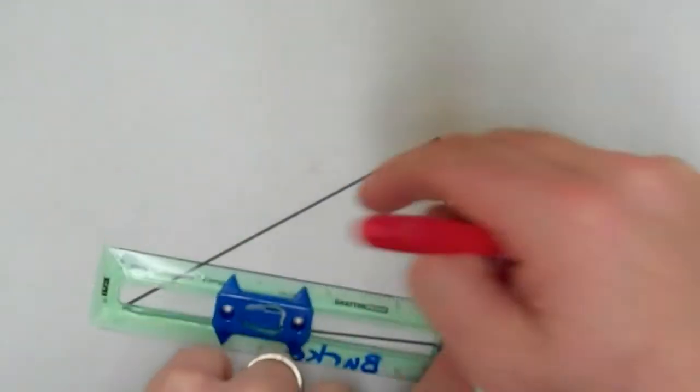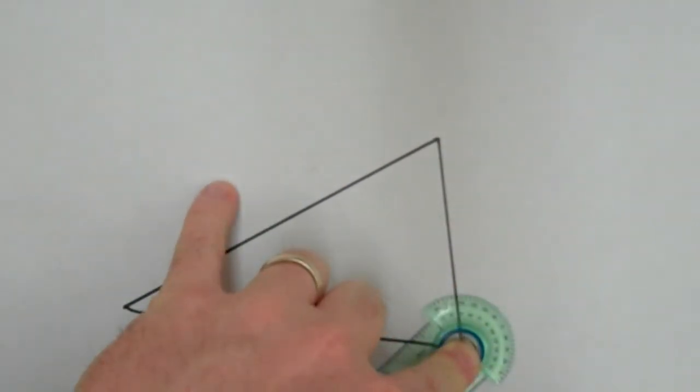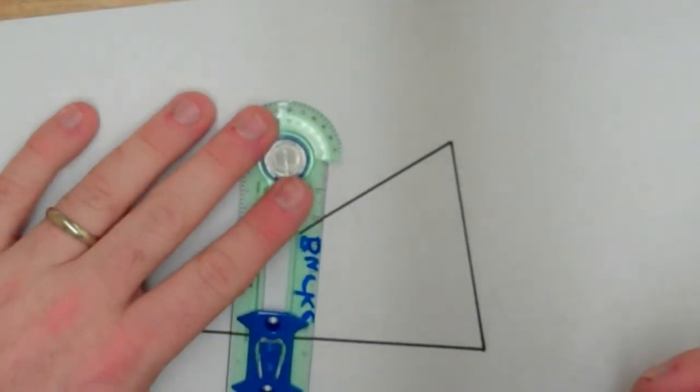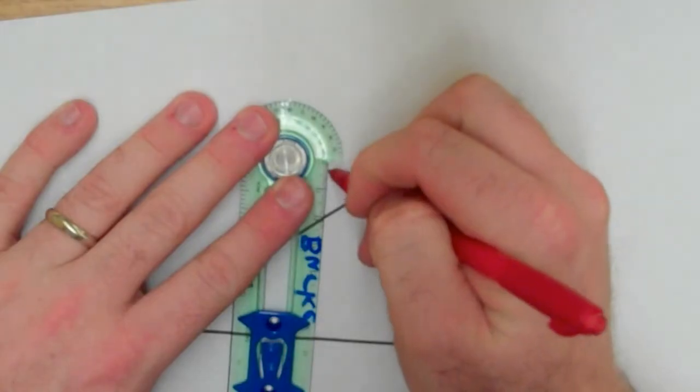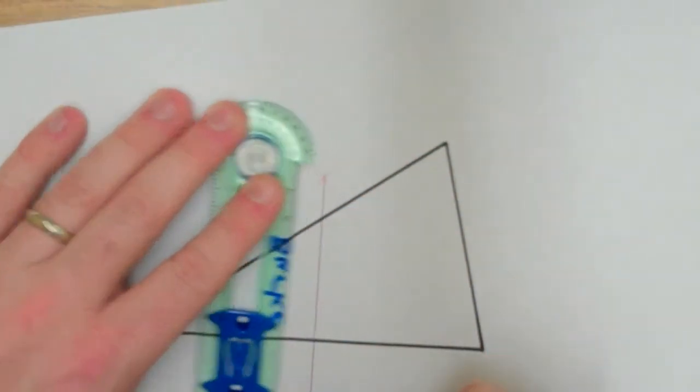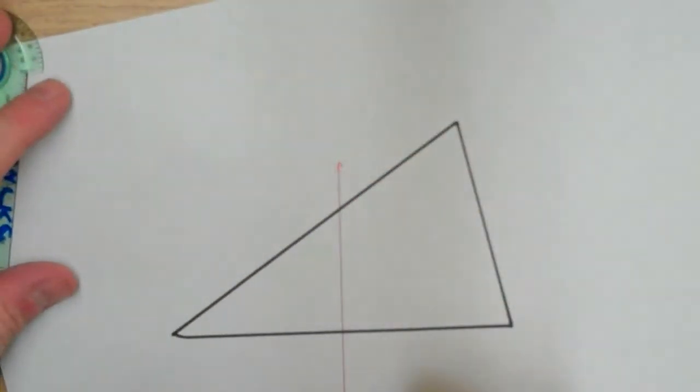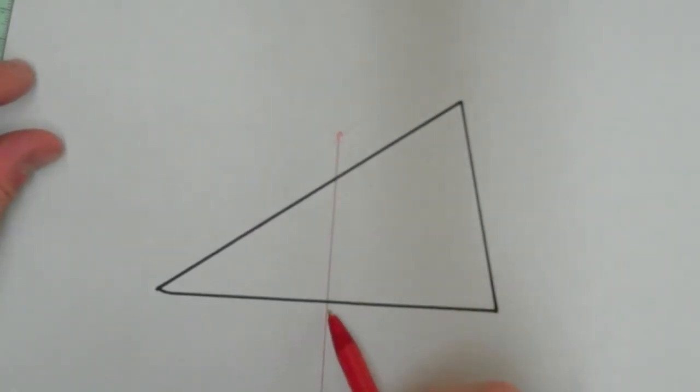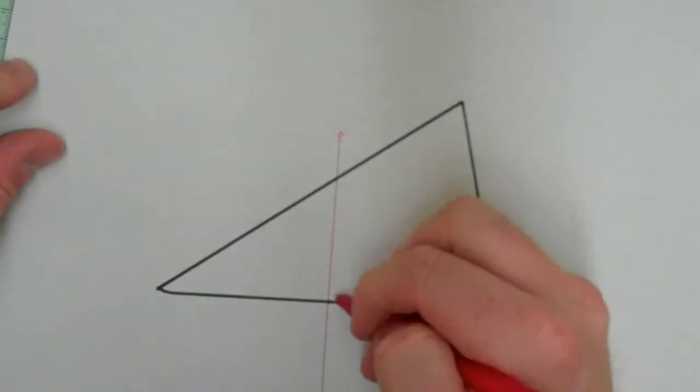Then turn your compass around the other way and make the same two marks above and below. So here's one, and there's the other. And then I'm going to connect these two points. Now, since this is the perpendicular bisector, I know that this is the midpoint of this segment, and it's also perpendicular to it.